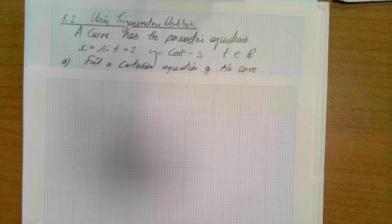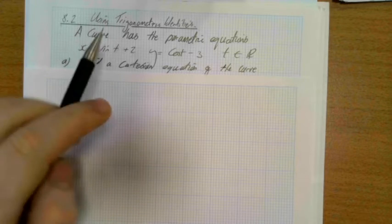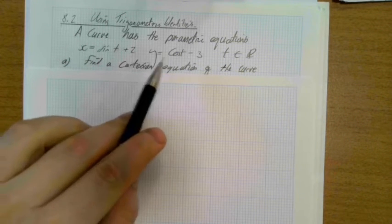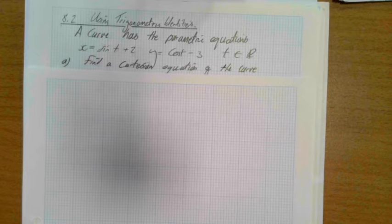So you might just want to have a look at this first problem here. We've been given that x is equal to sine t plus 2, y is equal to cos t minus 3, so t is any element that's real, and we're asked then to find a Cartesian equation of the curve.